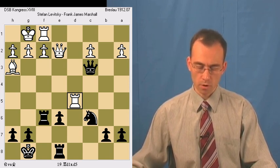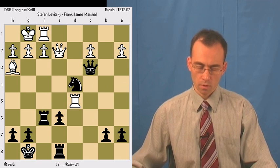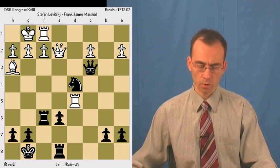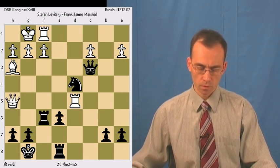So black plays therefore black plays knight d4, attacking white's queen. Queen h5.